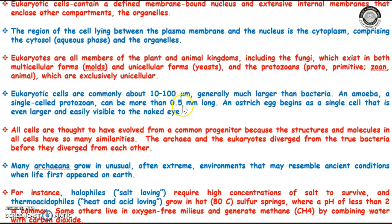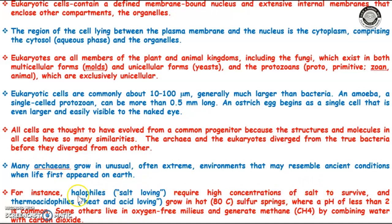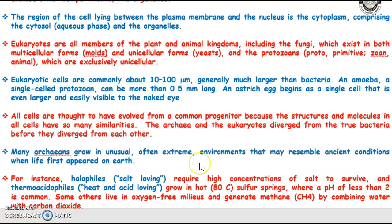All cells are thought to have evolved from a common progenitor because the structure and function — right from prokaryotes to eukaryotes — the molecules and cell components show similarity. Archaea and eukaryotes are thought to have diverged from two bacteria. Archaeans grow in very unusual environments: halophiles are salt-loving, thermoacidophiles are heat and acid-loving, while some live in oxygen-free conditions and generate methane.